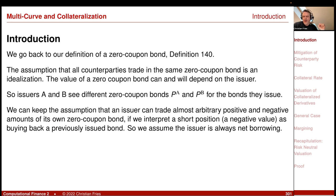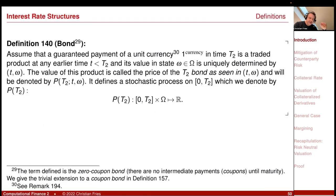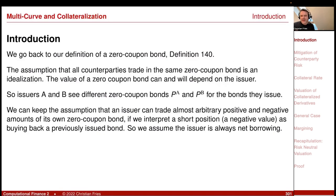What is wrong in our theory? Let's go back to our definition of the zero-coupon bond. It was the atomic object that was more or less our first definition that laid the basis of all this interest rate theory. We assumed that there is a guaranteed payment of unit currency traded, and the value of this is the zero-coupon bond, and everybody can trade in this financial product. Well, this is not the case. The assumption that all counterparties can trade in the same zero-coupon bond is an idealization.